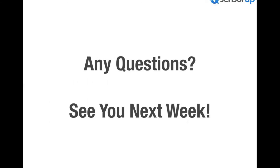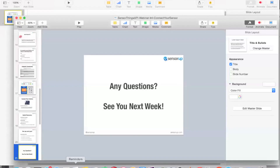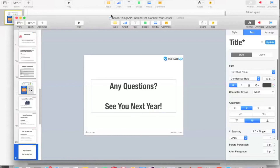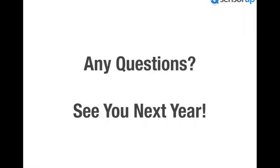Any questions? The first question: can deep insert create a Thing, Location, and DataStream in a single shot? Actually, it takes two requests — first create the Thing with Location, then create the DataStream with the other entities in the second request. You can find more details in the gist.